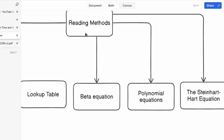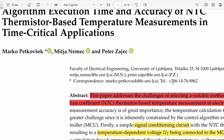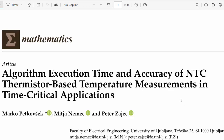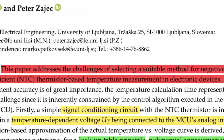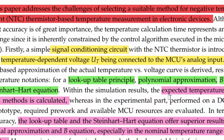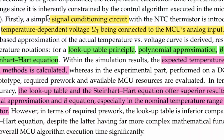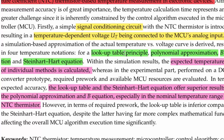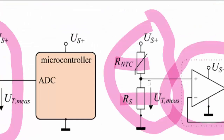Now let's look at where these readings come from. There is a paper on algorithm execution time and accuracy of NTC thermistor-based temperature measurements in time-critical applications - obviously relevant to our RTOS-based methods. This paper addresses the challenge of selecting a suitable method for NTC thermistor-based temperature measurement in electronic devices. We need a signal conditioning circuit to get a temperature-dependent voltage connected to the microcontroller analog input. The methods mentioned are: lookup table, polynomial approximation, beta equation, and Steinhart equation.